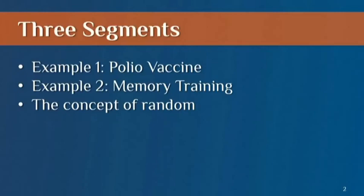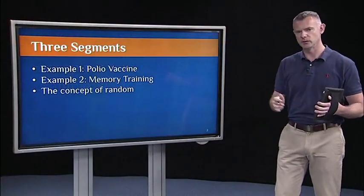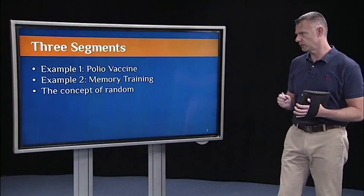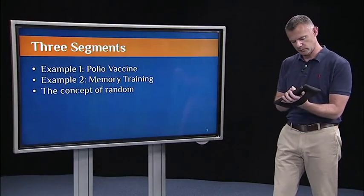In the second segment, I'll give you another example — more recent research on working memory training. And then in the third segment, we'll talk more about the concept of randomness. You'll see that an important aspect of experimental research is random selection from a population and random assignment to conditions. So let's go into this first segment.